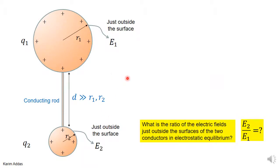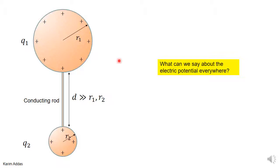What we're after is the ratio of the electric field E2 at a point just outside the small conductor to the electric field E1 just outside the large conductor. If we're able to show that E2 is much bigger than E1, this demonstrates that the electric field at sharp edges is much bigger than the electric field where you have low curvature.